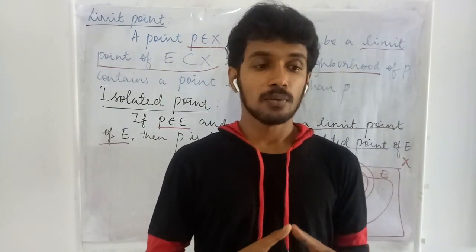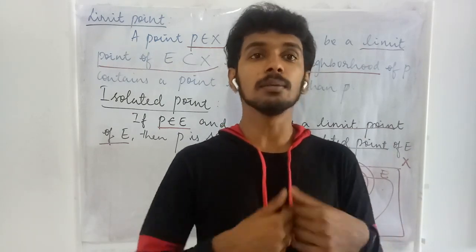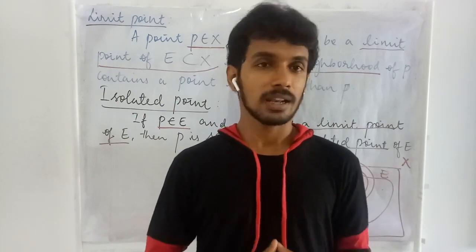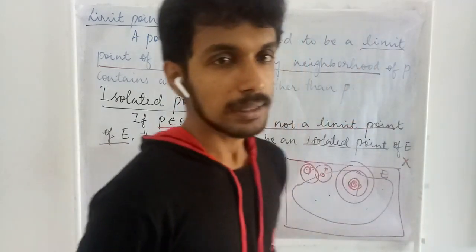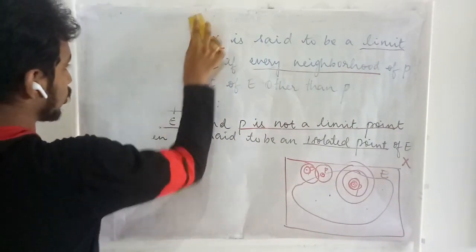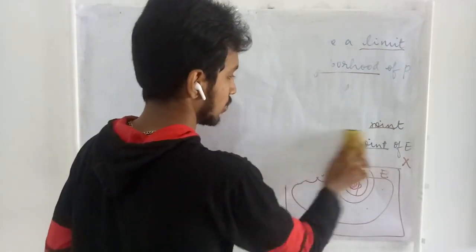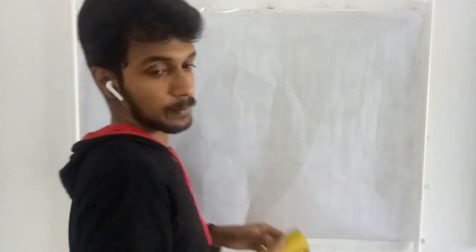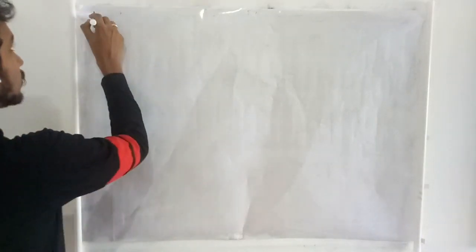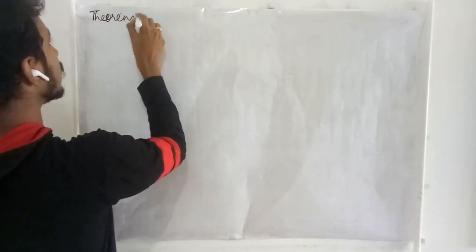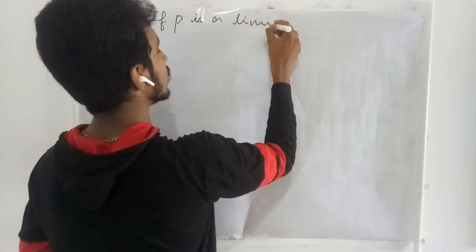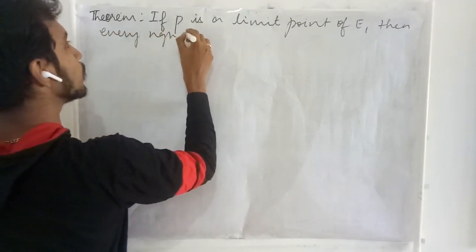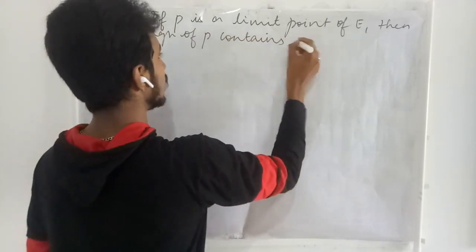We may have a question: what happens when a point of a set is itself a limit point of the set? Do we have any relation or definitions for these things? Yes, of course we do, and we will explore those things as the course proceeds. Now let us prove a result concerning the limit point and the neighborhood. The theorem states: if P is a limit point of E, then every neighborhood of P contains infinitely many points of E.